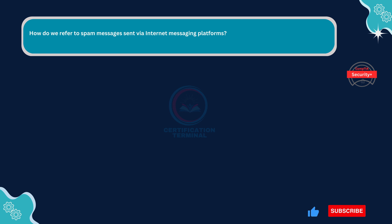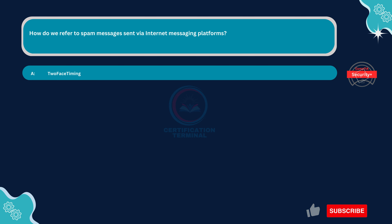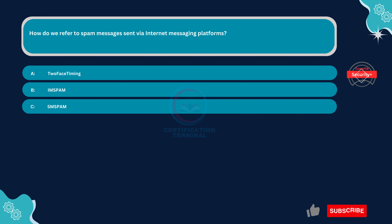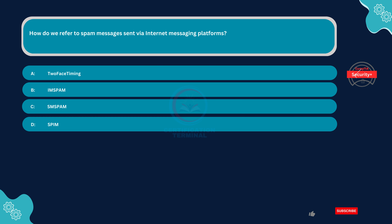How do we refer to spam messages sent via internet messaging platforms? Option A, two-face timing. Option B, IM spam. Option C, SM spam. Option D, SBIM.